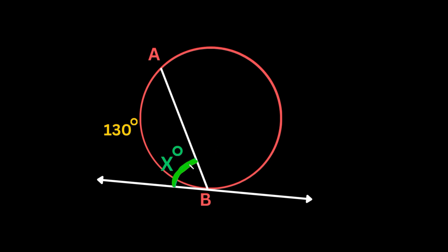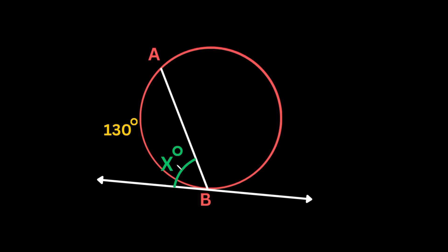It actually creates two angles — this angle right here and also this angle on the other side. These two angles create special relationships with the arcs of the circle. The relationship is that the angle is exactly half of whatever the arc measure is. So here if we're looking for this angle, we're given that the arc measure from A to B is 130 degrees, and half of 130 is 65. So X is equal to 65 degrees.